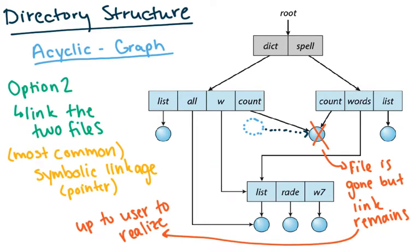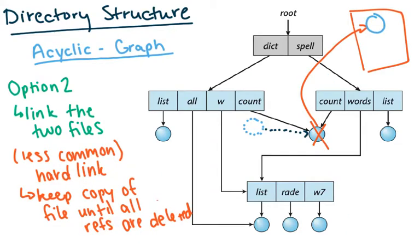Some issues with symbolic links: if one user deletes the file, the file is gone but the link usually remains — it becomes a broken link, so the other user tries to open it and there's no file there. Less common but more robust is a hard link. With a hard link, whenever a file is deleted, it's not actually deleted if there's another link to it — as long as another link exists, the file is stored somewhere else, and only when all links are gone can it be finally deleted. This is done with the ln command instead of ln -s.